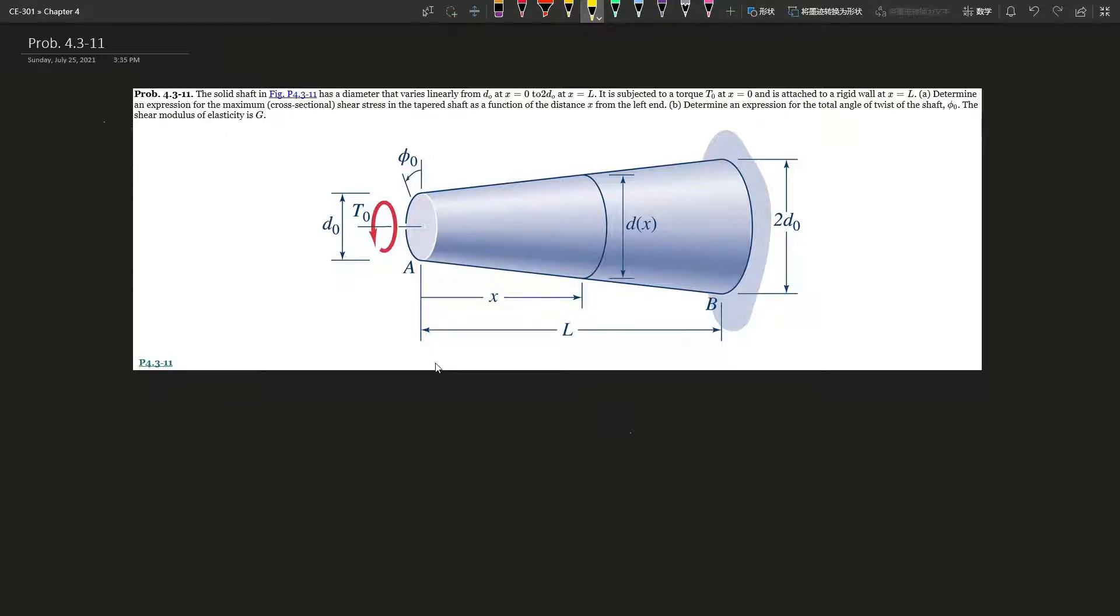Okay, so problem 1.3-11. The solid shaft in the figure has a diameter that varies linearly from d0 at x equals 0 to 2d0 at x equals L. It is subjected to a torque T0 at x equals 0 and is attached to a rigid wall at x equals L. Determine the expression of the maximum cross-section shear stress in the tapered shaft as a function of the distance x from the left end. Determine the expression for the total angle twist of the shaft.